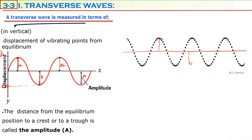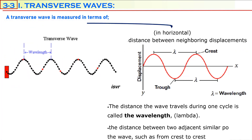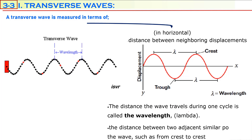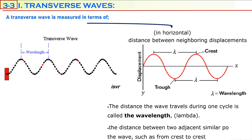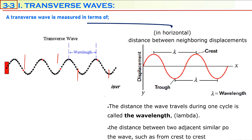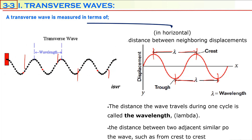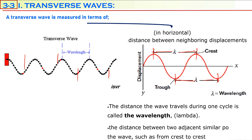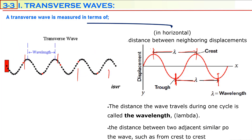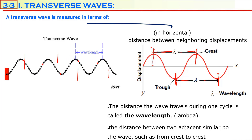The transverse wave can also be measured in terms of horizontal distance. The distance the wave travels during one cycle, or the distance between two similar neighboring displacement points, is known as one wavelength. The distance from crest to crest or from trough to trough is measured as one wavelength — denoted lambda. It is the distance between two adjacent similar points of the wave.